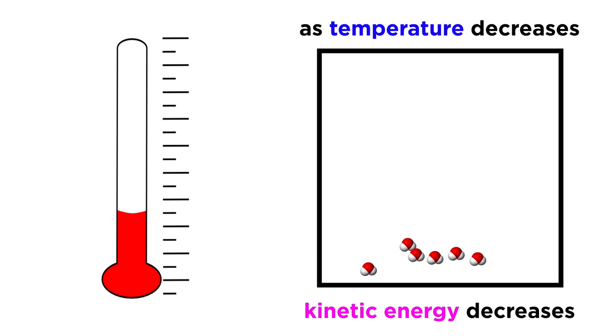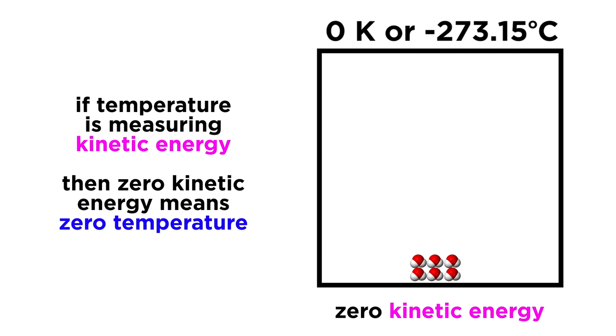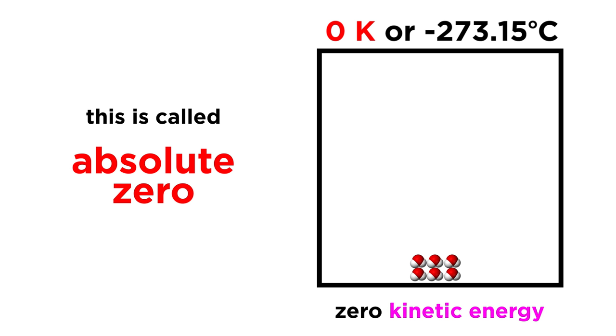As the temperature becomes very cold, particles slow to a complete stop, and there is no more kinetic energy. No more kinetic energy of motion means no more temperature by any real definition of the term, so we will call this absolute zero.